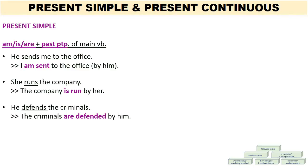He sends me to the office. We have 'he' as the subject, 'sends' as our main verb in the present simple tense, and 'me' as the object of the verb. So we switch places for the subject and the object. 'Me' becomes 'I.' Because this is the present simple: I am sent to the office by him. Very often we don't use the subject in the passive voice, because either the subject may not be important, or we may not know who the subject is, so: I am sent to the office.